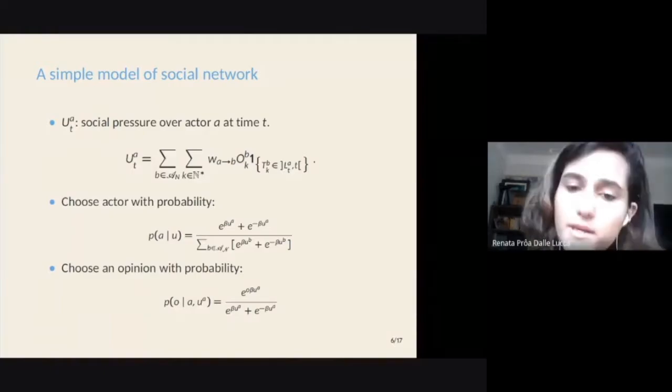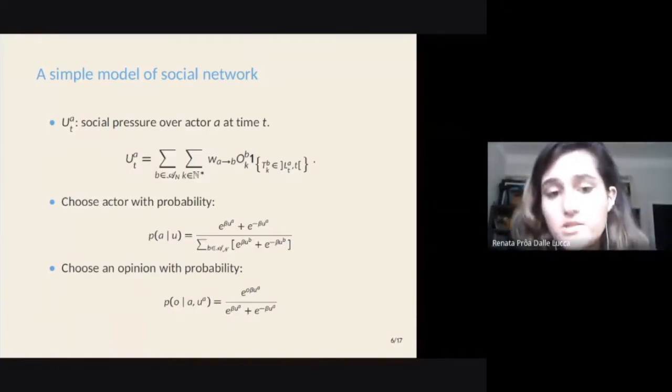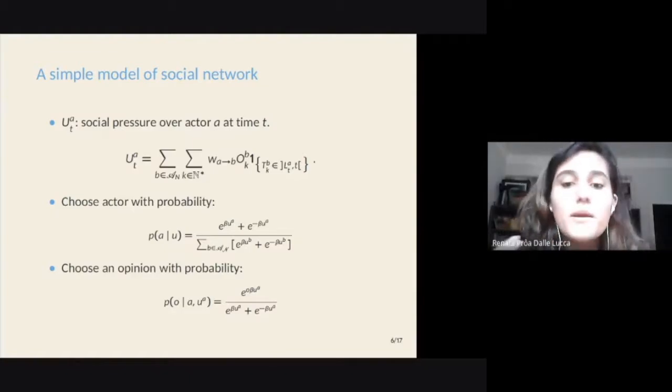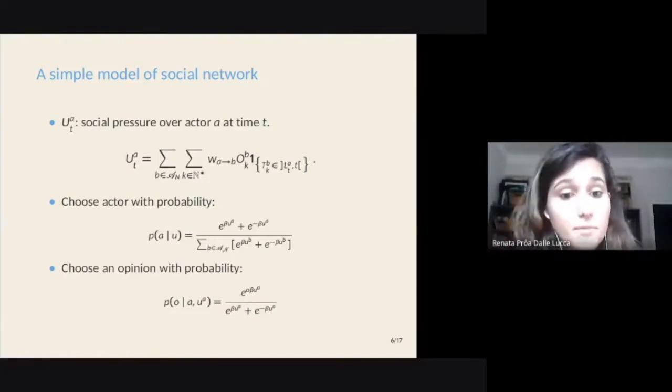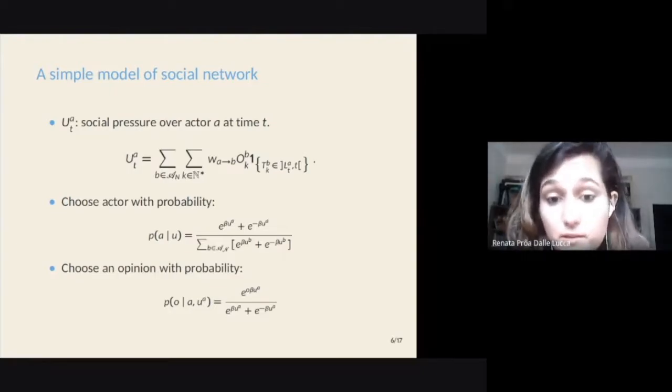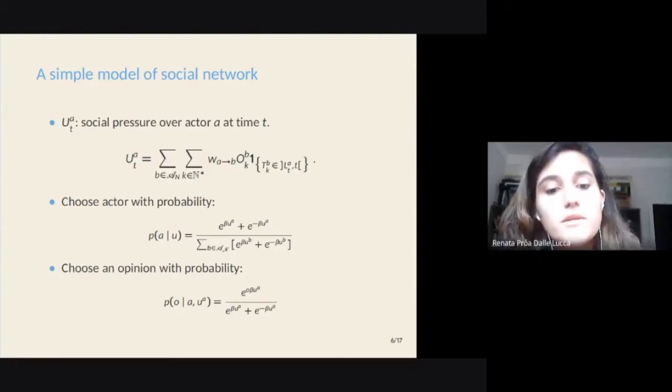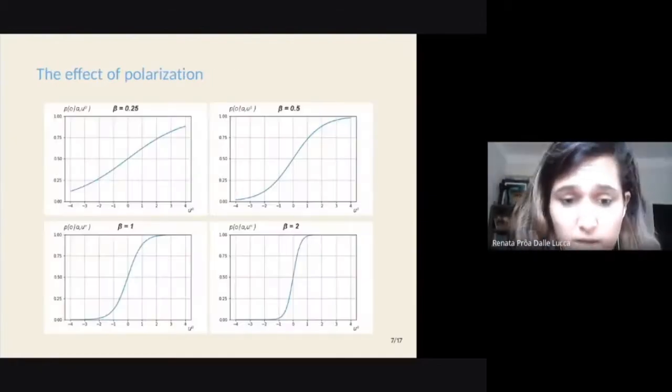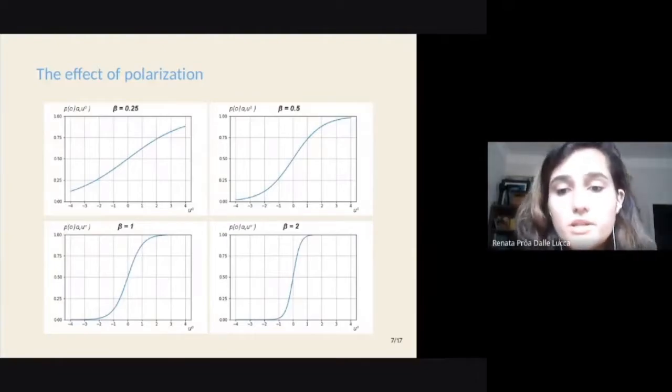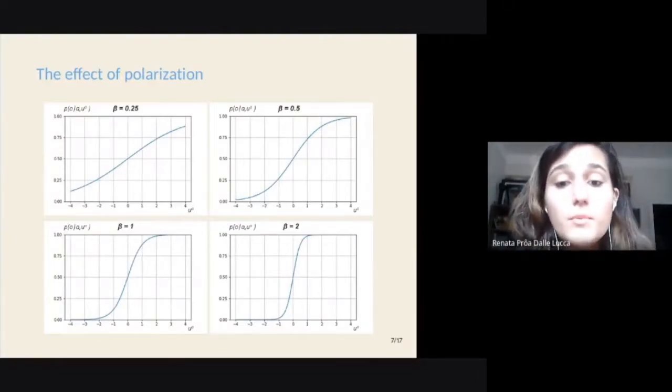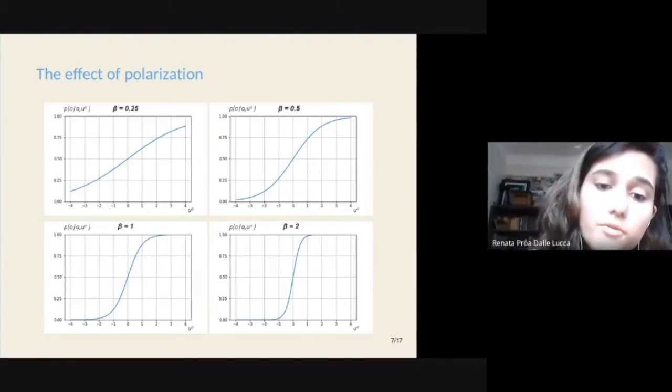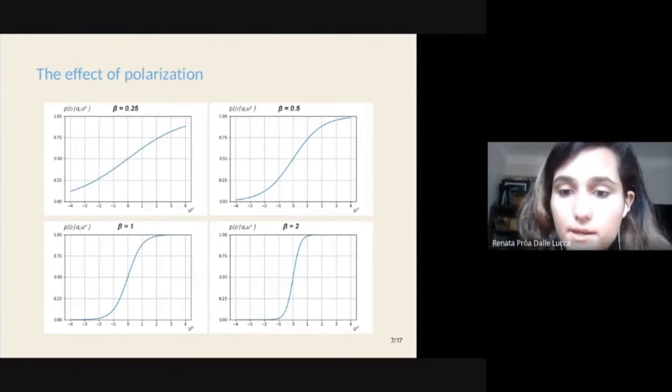We associate the actor and the opinion choice probabilities to a function of actor's potentials at time t, in a way that the probability of an actor being chosen increases exponentially with the module of its potential. Similarly, the probability of an actor choosing a given positive or negative opinion is exponentially dependent on the module of its potential in the corresponding direction, meaning if it's positive or negative. The transition probabilities also depend on a polarization parameter beta, in a way that the higher the value of beta, the more the social pressure increases, and the less probably an actor goes against it. Therefore, the higher the polarization, the more deterministically the process evolves.